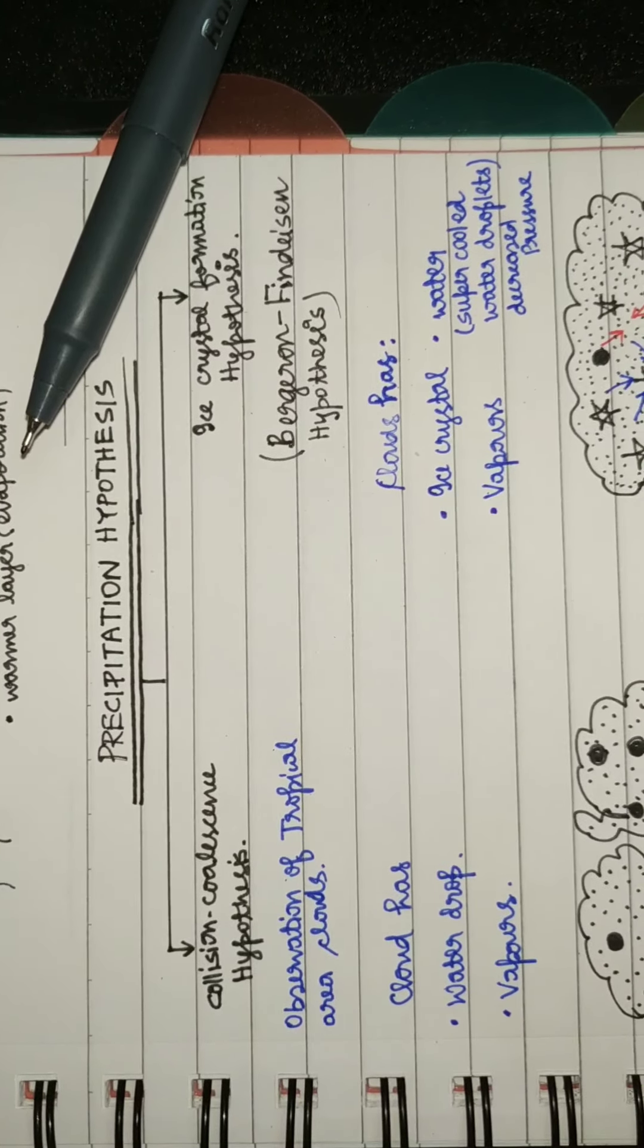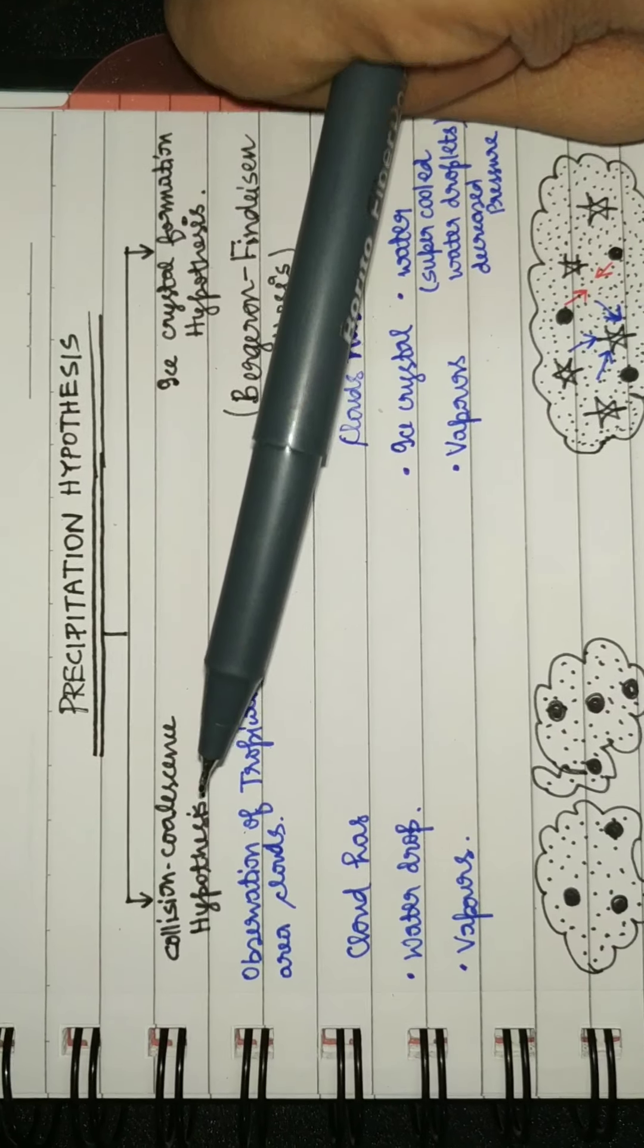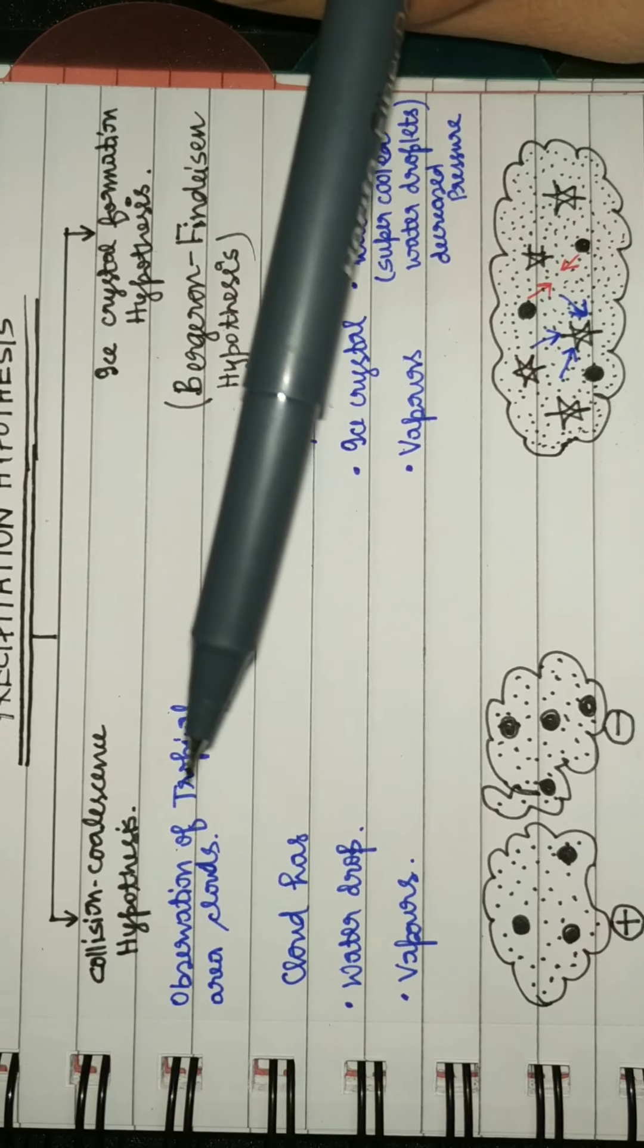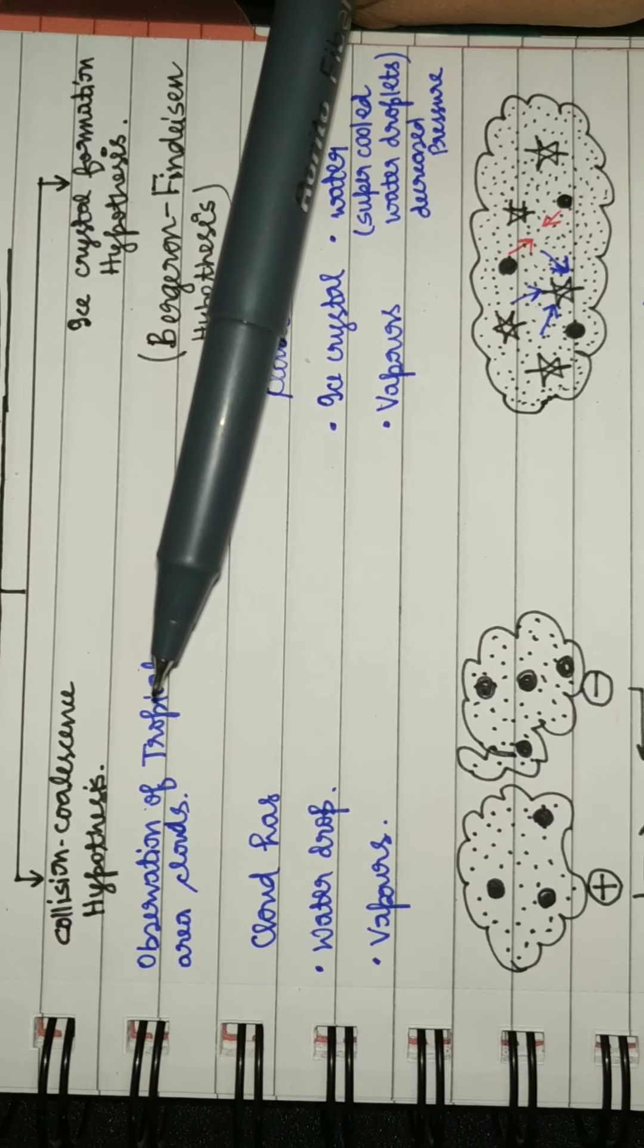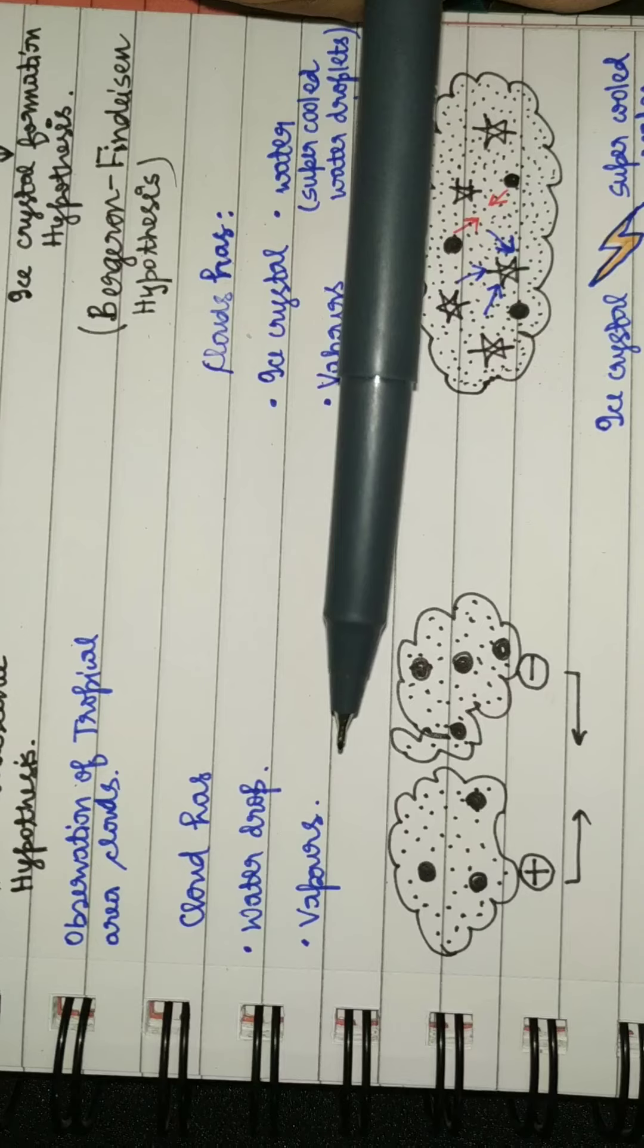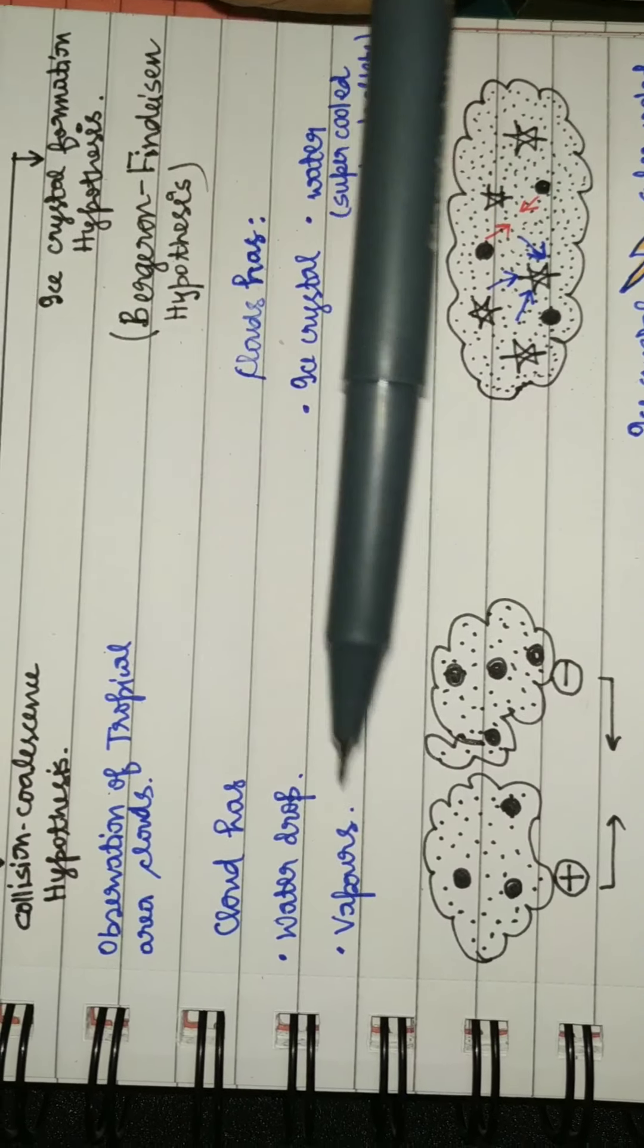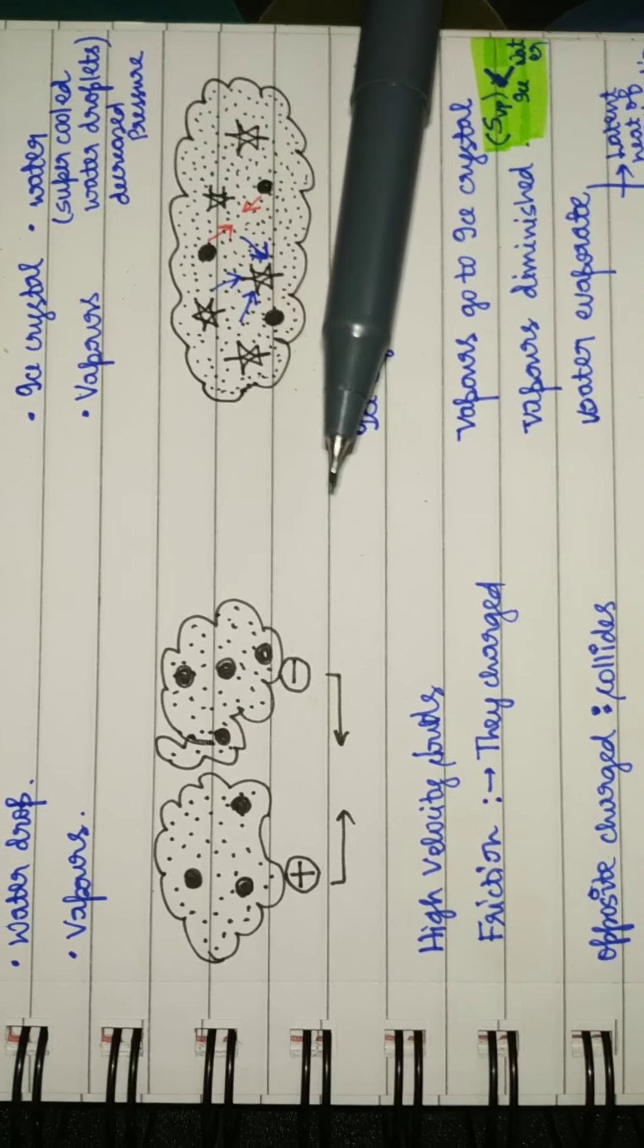So whatever theory we will be studying, we will be learning how water droplets or ice crystals increase their mass and size. Based on this, there are two theories. First is the collision coalescence hypothesis, and second is the ice crystal formation hypothesis. Collision coalescence hypothesis: this theory was developed by scientists observing the tropical area clouds.